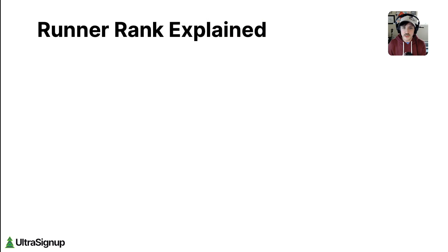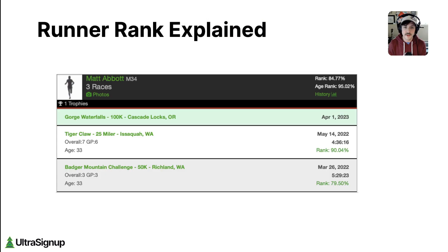I'm not going to discuss the merits of this system quite yet. My goal here is just to make sure we're all on the same page about what it means and how to calculate it. I'm going to use my own profile as the example here, since I only have two race results right now, which makes it easy.